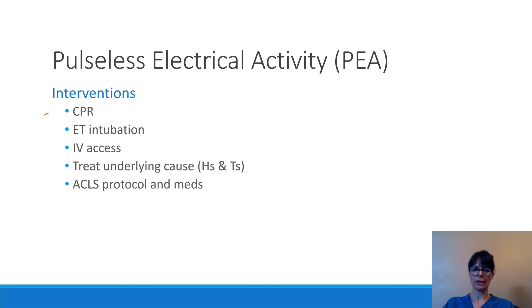Interventions are certainly CPR, and this is a non-shockable rhythm. We only shock rhythms that are ventricular dysrhythmias, such as ventricular tachycardia and ventricular fibrillation — so with PEA, we will not shock the patient. The patient will need endotracheal intubation as well as IV access, so we can treat the underlying causes from the H's and T's, and we will follow ACLS protocols and medications to hopefully stabilize the patient.